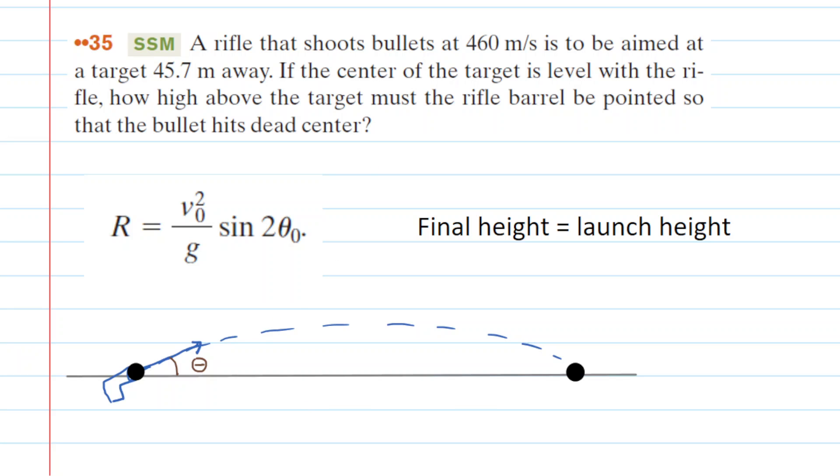In this question, a very important consideration is to notice that the final height of the bullet is equal to the launch height of the bullet, and we know that because it says that the center of the target is level with the rifle. So here is the center of the target and here is the rifle over here.